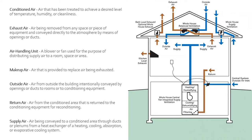Next is the air handling unit. That's a blower or fan used for the purpose of distributing supply air to a room, space, or area. The air handler in this case is shown here. 99% of the time in Texas, we don't have a basement, so it's going to be the unit in your attic.